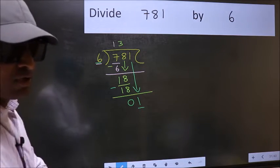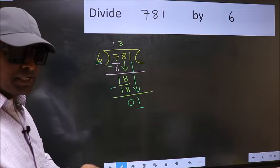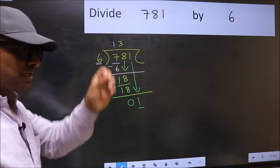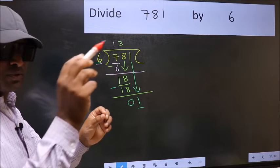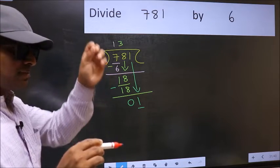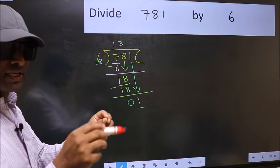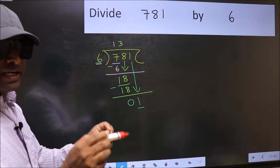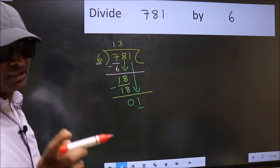Which is wrong. I repeat: bringing the number down and also putting a dot to take 0—both at the same step—you should not do.